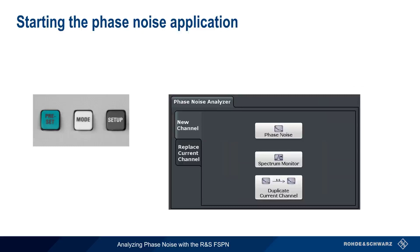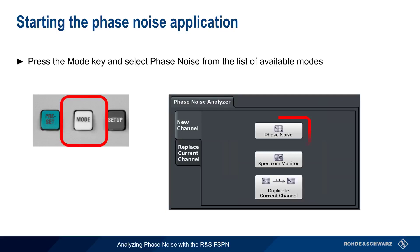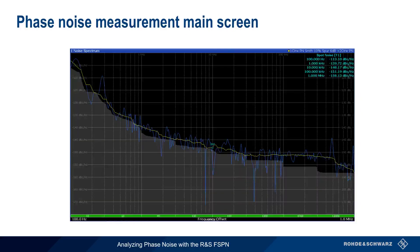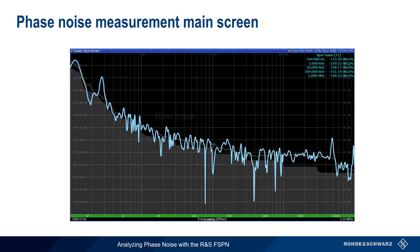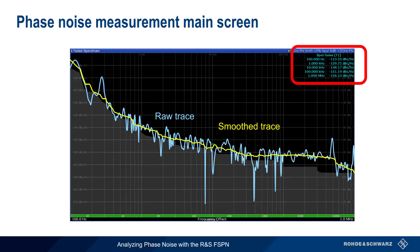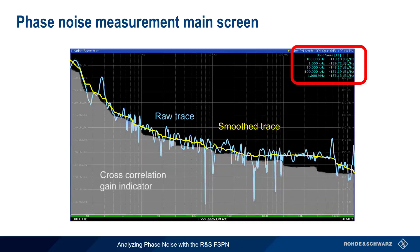To start the phase noise application on the FSPN, simply press the Mode key and then select Phase Noise from the list of available modes. This is the main phase noise measurement screen. In most cases, the source signal will be automatically detected and measured by the FSPN. By default, phase noise results are usually given as both raw and smooth traces of the single sideband phase noise. Phase noise is also shown as numeric values or spot noise, and if cross-correlation is used, the gray area beneath the trace shows the cross-correlation gain. In the remainder of this presentation, we'll explain how to modify default values and behavior, and how to use additional features and functionality to make and interpret phase noise measurements.